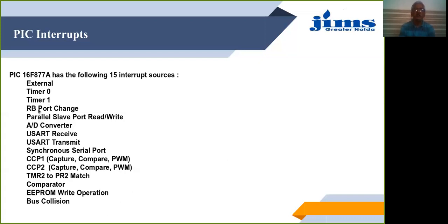Interrupt sources can come from Port B — a status change on Port B. They can come from the parallel slave port read and write operations, from the A-to-D converter — whether the A-to-D conversion has been completed. There is also USART receive and transmit type interrupts, synchronous serial port, capture, compare and PWM — CCP1 and CCP2. Then EEPROM write operation completed, and bus collision detection. These are the 15 sources of interrupts available in the PIC 16F877.